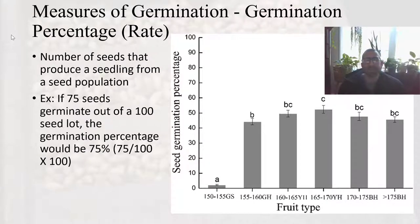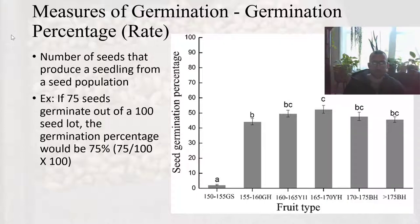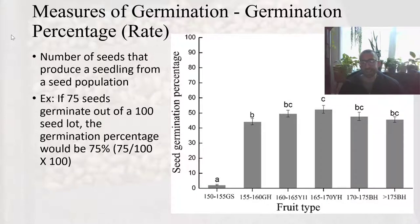Measures of germination. There are three big ways that we can measure germination. The first is germination percentage. Sometimes you will see this referred to as germination rate, but germination rate can also refer to germination speed. So if you see that term, it's important to see exactly what it's referring to — there's a little bit of ambiguity sometimes with that term.